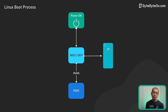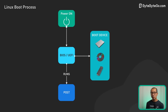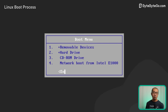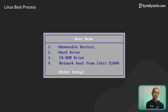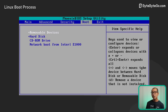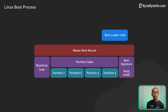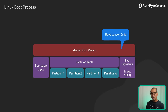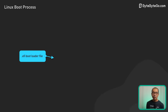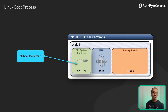If everything checks out with POST, the BIOS or UEFI needs to find and load the bootloader software. The bootloader is usually set to check the hard drive first, then USB drives or CDs if nothing is found on the hard drive. You can customize this order in the BIOS settings. On a BIOS system, the bootloader code lives in the first chunk of the hard drive called the Master Boot Record. For UEFI, there's a separate partition that stores files like the .efi bootloader file.